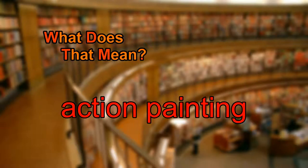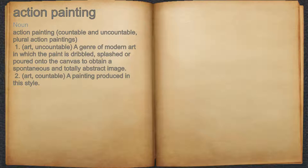What does action painting mean? Action painting. Noun. 1. Art, uncountable: a genre of modern art in which the paint is dribbled, splashed, or poured onto the canvas to obtain a spontaneous and totally abstract image.